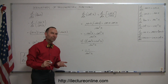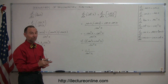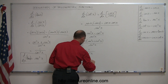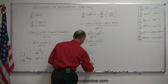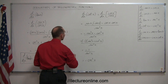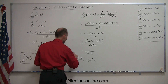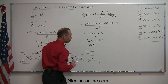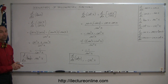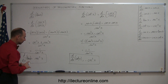One over sine of x is the cosecant of x, so one over sine squared of x is cosecant squared of x. With the negative in front, this is equal to minus cosecant squared of x. That means d/dx of the cotangent of x is equal to minus cosecant squared of x. And that's how you take the derivative of the tangent and the cotangent of x. Let's go for the last two on the list in our next video. Thank you.